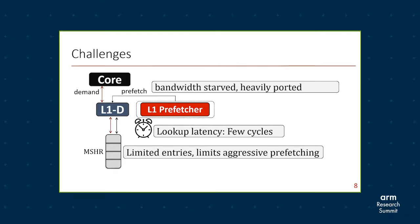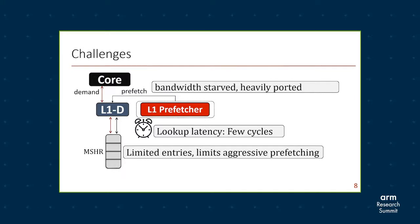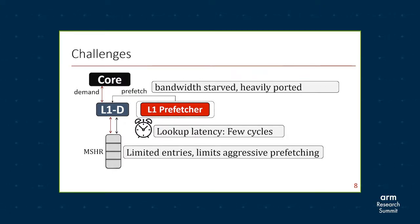Prefetching at L1 is also full of challenges. The L1D cache is already bandwidth-starved and it's heavily ported. So if a prefetcher wants to check whether what it wants to prefetch is already there in the cache, it needs another port to access L1D, which can hamper the bandwidth-starved L1D. The L1D is also highly critical in terms of latency — the lookup latency is just a few cycles, say three to four cycles — so the prefetcher should be extremely agile so that it can learn and prefetch within those few cycles.